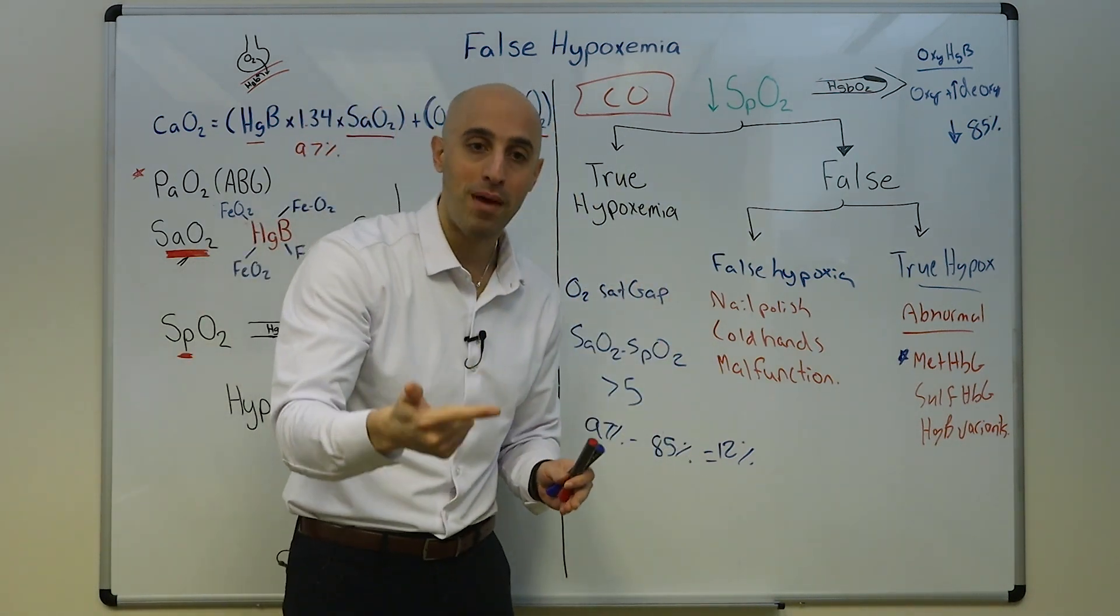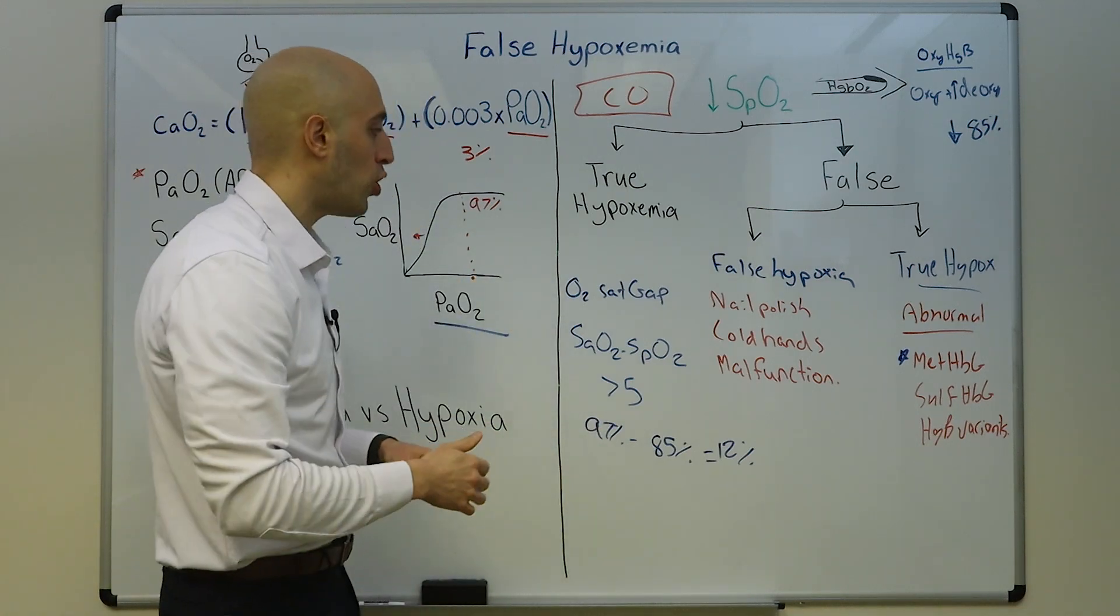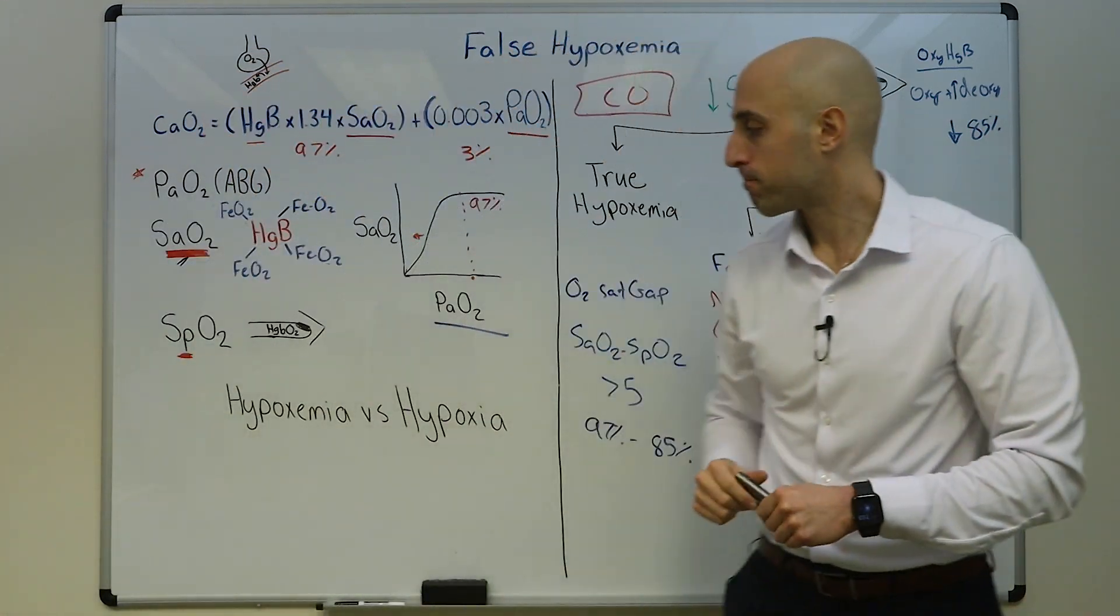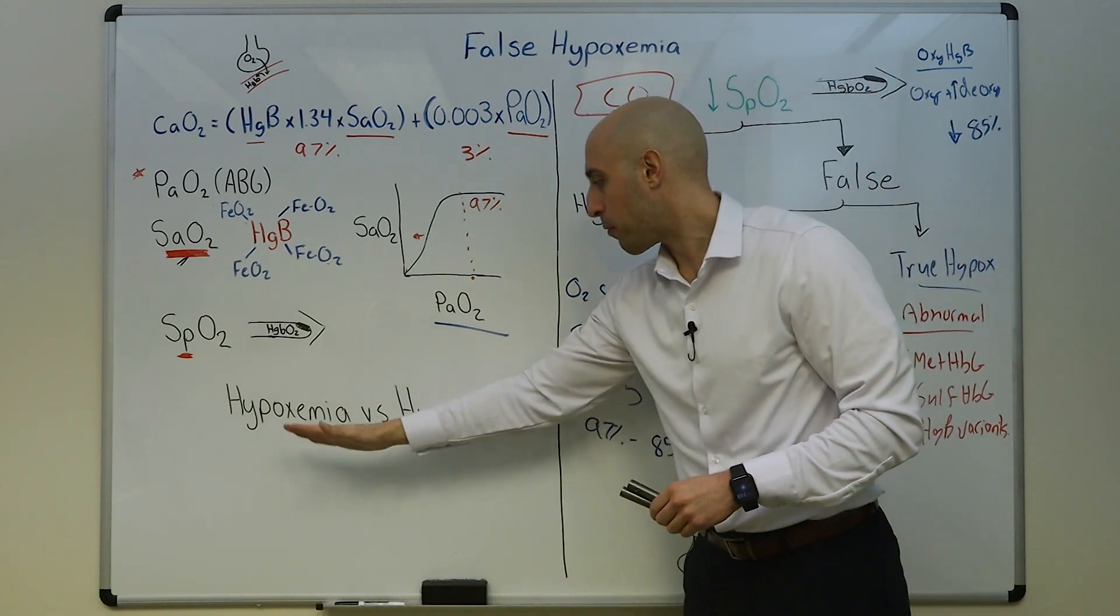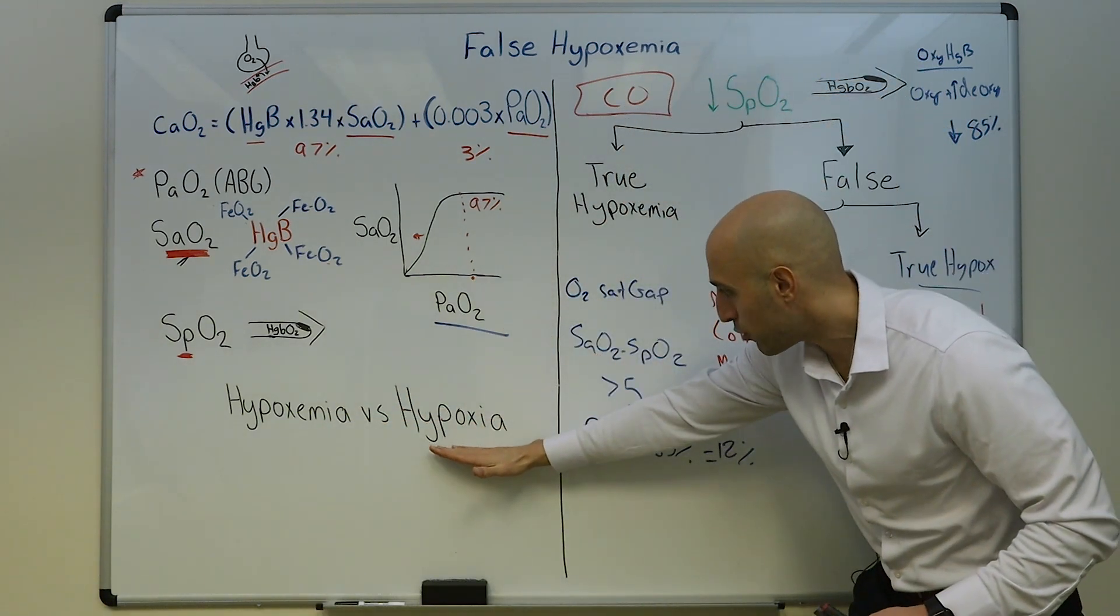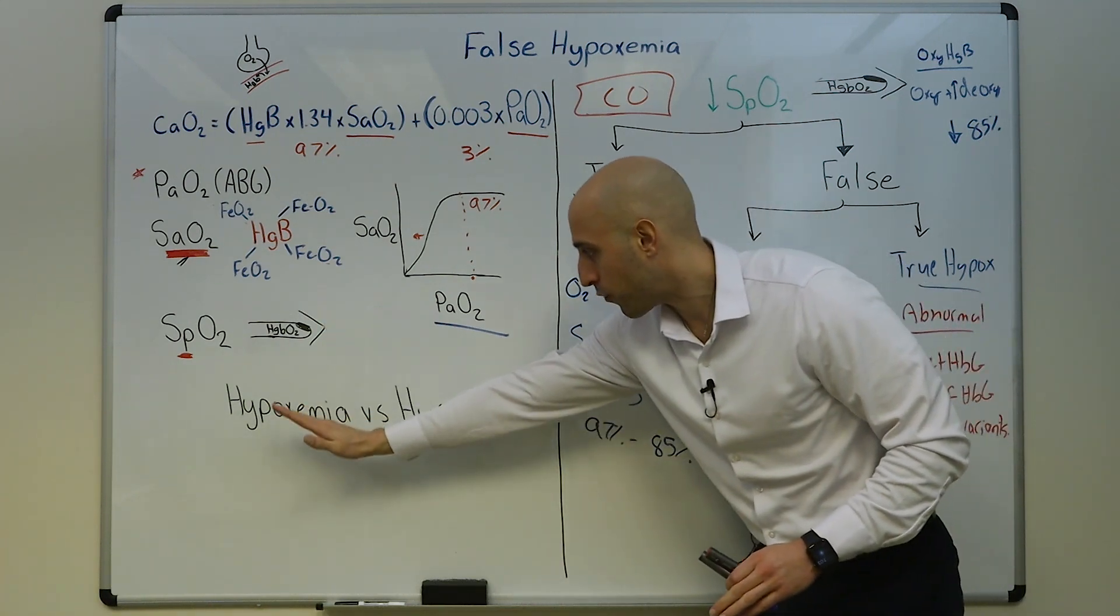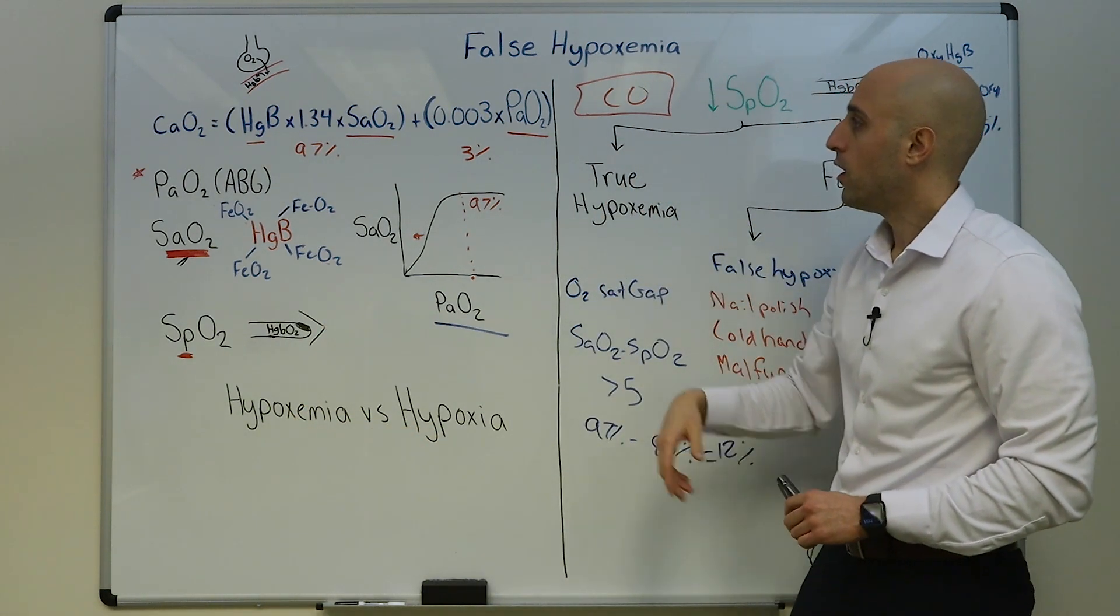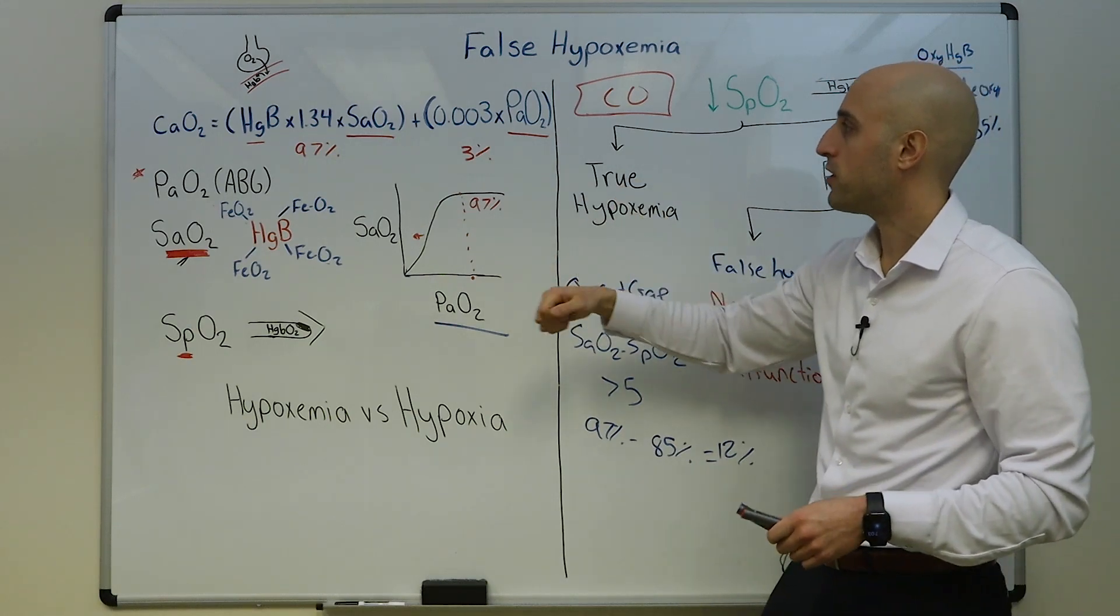The co-oximeter, unlike the pulse ox, can shine different wavelengths to actually distinguish carboxyhemoglobin from methemoglobin from normal hemoglobin. To summarize, there is a difference between hypoxemia and hypoxia. That's not pedantic. This refers to cells not getting enough oxygen, this refers to the PaO2.